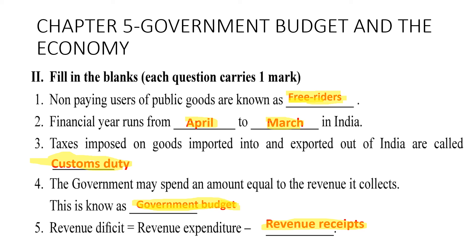Third: taxes imposed on goods imported into and exported out of India are called customs duty. Fourth: when the government spends an amount equal to the revenue it collects, this is known as a balanced government budget. Fifth: revenue deficit equals revenue expenditure minus revenue receipts.